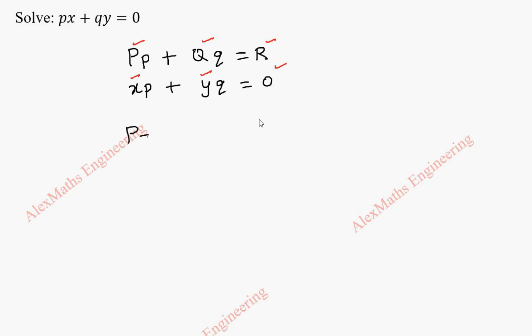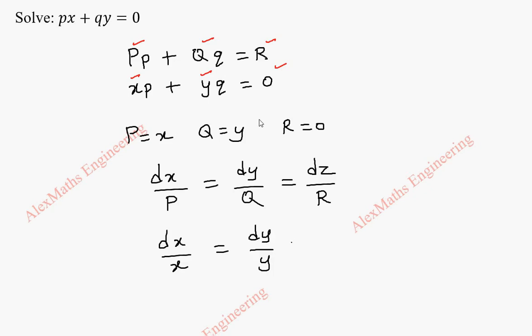Let's take it separately. So P is x, Q is y and r is 0. It is enough to solve this equation dx by P equal to dy by Q equal to dz by r. By substituting, we get dx by x equal to dy by y equal to dz by 0.